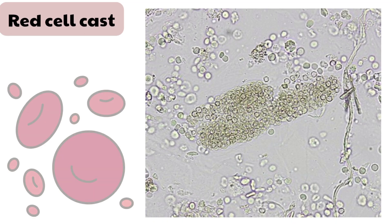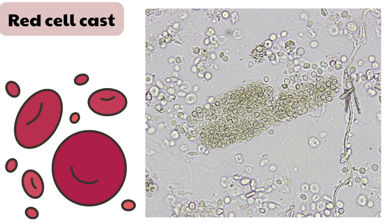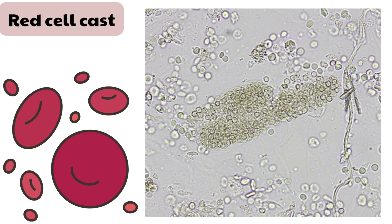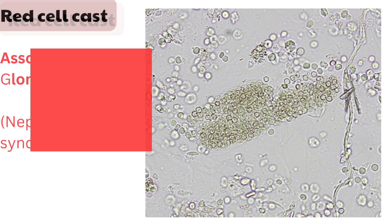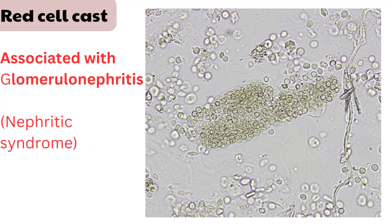First: red blood cell casts. These are indicative of glomerulonephritis, specifically the nephritic type. Glomerulonephritis involves inflammation of the glomeruli, which are the filtering units of the kidney.